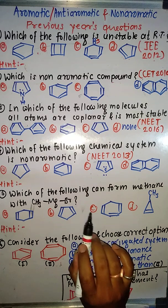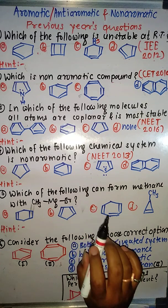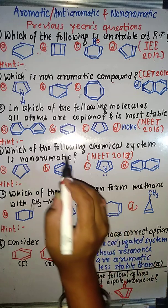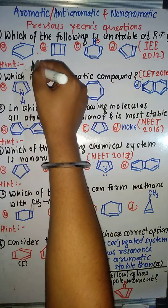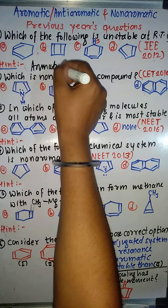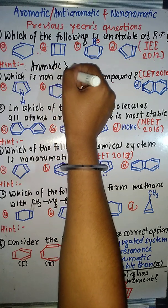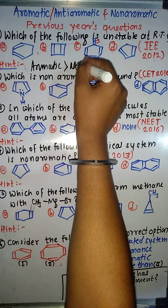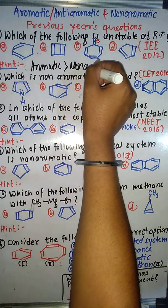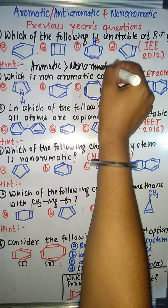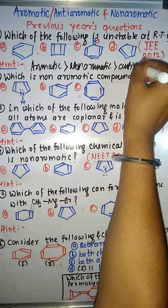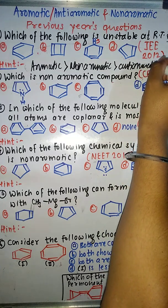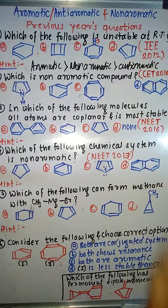So what is the first question? Which of the following is unstable at room temperature? Remember that the aromatic compound is the most stable, more stable compared to non-aromatic, and the least stable is the anti-aromatic compound. So now we have to identify the case of an anti-aromatic compound.